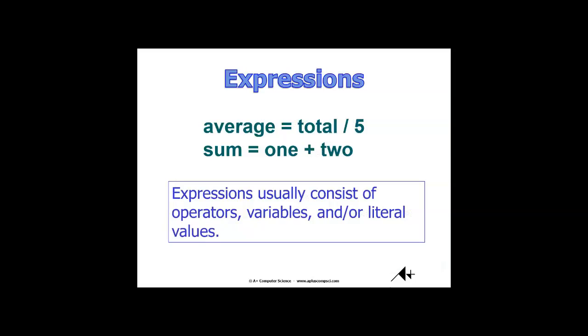Here we have a couple expression examples. We've got average equals total divided by five and sum equals one plus two. In the first example we're going to take variable total, take its value, divide that by five and store the result in average. The next line we're going to take whatever variable one stores plus what variable two stores and add that up and put that result in sum. Standard stuff just like what you'd see if you were dealing with some expressions in math.